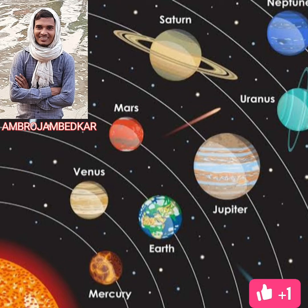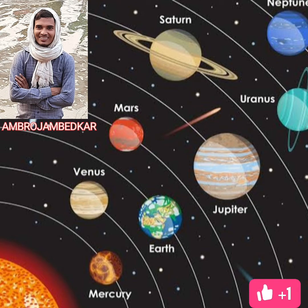The sun is at the center of the solar system. Its size is 13 lakh times that of the Earth. It is the nearest star to the Earth and the ultimate source of energy for life on Earth. Its diameter is 14 lakh kilometers. It is composed of 71 percent hydrogen, 26.5 percent helium, and other elements.